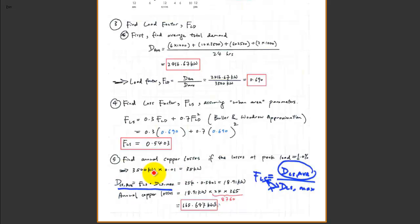Make sure you understand the question accurately — it asks for annual copper losses. Annual is the key. There are 24 hours times 365 days, giving the magic number 8760 hours per year. Multiplying 8760 by 18.91 kilowatts gives you the annual copper losses, which is 165,647 kilowatt-hours.